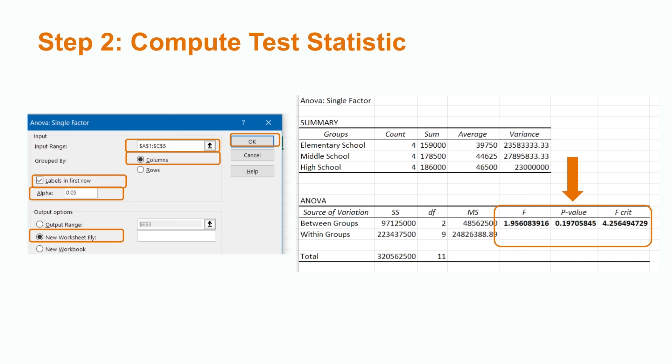We now select the OK button. Our output shows us that we have an F-statistic of 1.96, a p-value of 0.1971, and a critical value of 4.26.